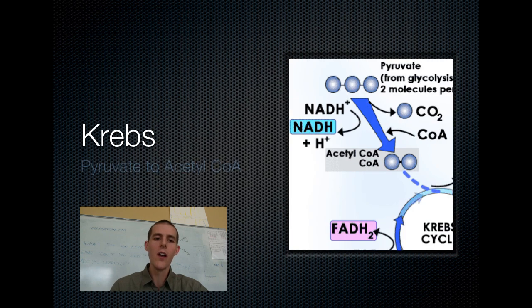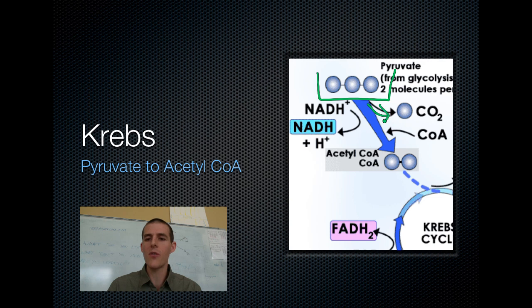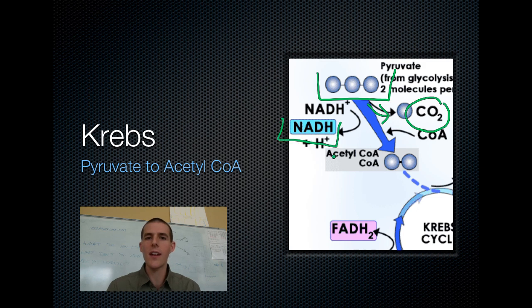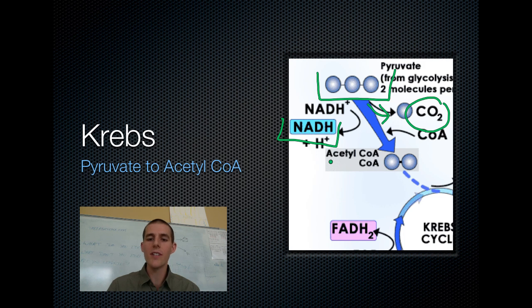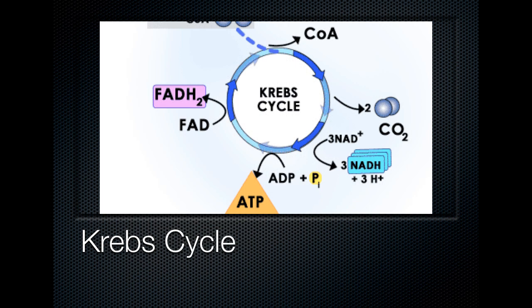Before we begin the Krebs cycle, our pyruvate needs a little rearranging. It goes from being pyruvate to a molecule called acetyl-CoA. A pyruvate that has just come over from glycolysis gets worked on by some enzymes. In the process, a couple of things are given off: you get CO2 — some of the CO2 you breathe out when you exhale — and you also get an NADH molecule carrying a high energy electron to the electron transport chain. Pyruvate itself cannot enter the mitochondria, so it has to be changed into acetyl-CoA first — this is kind of like its club card that gets it inside.